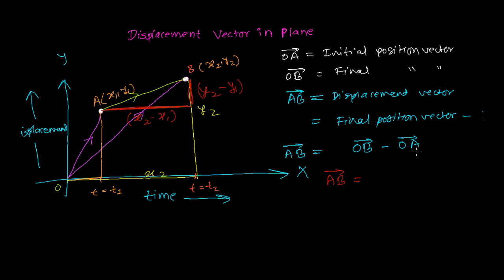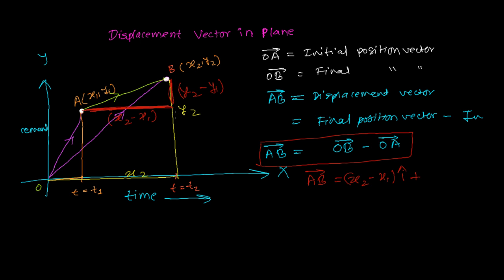So AB = OB − OA is one method. Using coordinates, you can write the x-component plus the y-component: the x-component is (x2 − x1)î and the y-component is (y2 − y1)ĵ. Here we are dealing with 2D — just x and y in a plane. In 3D, you would add a z-component with k̂.